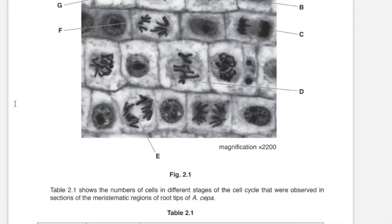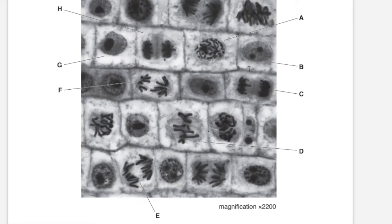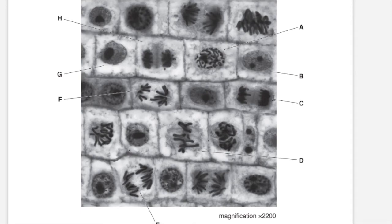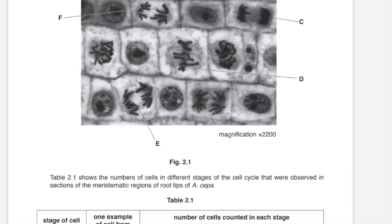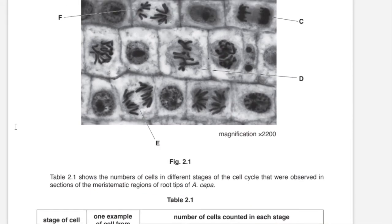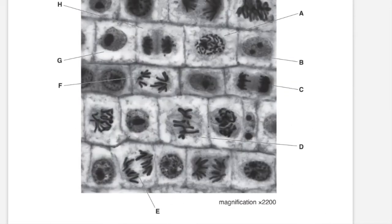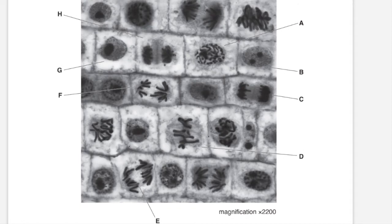Prophase: in this phase the chromosomes would have condensed, but they would not be aligned as they are in metaphase, which follows prophase, nor would they be pulled apart like they would be in anaphase. So that cell would be cell A. During metaphase, the chromosomes would be aligned along the equator of the spindle fiber, and that would be cell D. During anaphase, the sister chromatids would be pulled apart, like in cells E and F. During telophase, the structure of the chromatids would not be as distinctive, and that would be cell H.